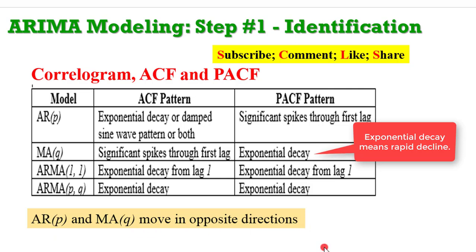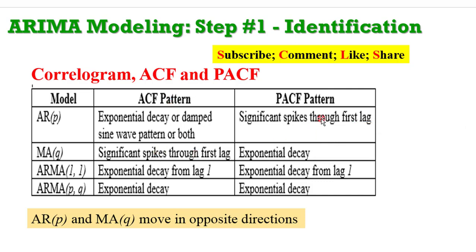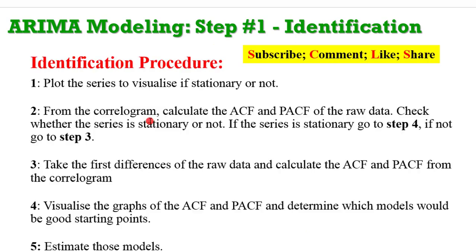For a strictly AR process, the ACF pattern shows exponential decay and the PACF shows significant spikes. For a strictly MA process, the ACF shows significant spikes while the PACF shows exponential decay — they are in opposite directions. But if both indicate the same pattern, you have an ARMA model. Try to understand this table; once you are familiar with it, you can easily identify whether a series is strictly AR, strictly MA, or a combination. It is an art, not a science, so you need to master the skills.